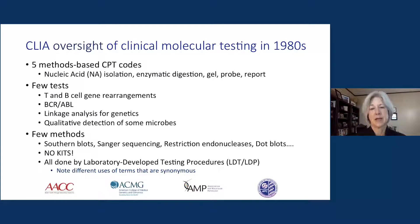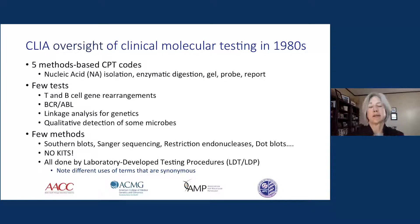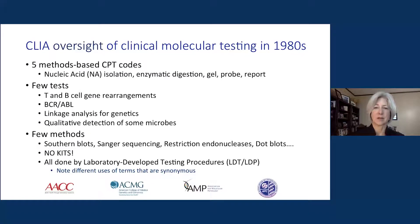At that time we had very few tests. The initial tests included T and B cell gene rearrangements by southern blotting, BCR-ABL, and linkage analysis for genetics. A number of labs were looking at cystic fibrosis inheritance, some used RFLP analysis, and there were a few laboratories doing qualitative detection for various microbes such as cytomegalovirus. We had precious few methods at our fingertips — largely radioactive southern blotting, Sanger sequencing, restriction endonucleases, gels, and dot blots.